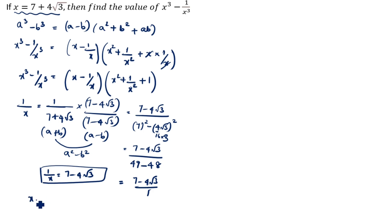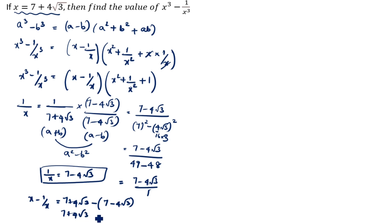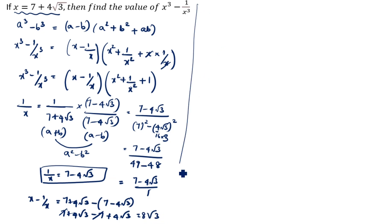Now we will calculate x minus 1 by x. x is 7 plus 4 root 3, minus (7 minus 4 root 3). Removing the bracket: 7 plus 4 root 3 minus 7 plus 4 root 3. The 7s cancel, giving 8 root 3. So x minus 1 by x is equal to 8 root 3.